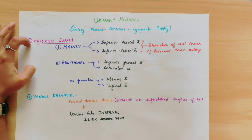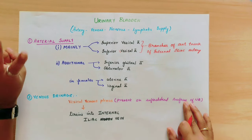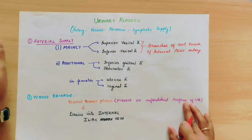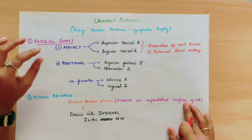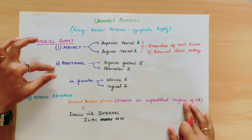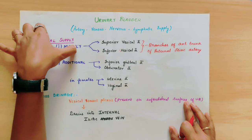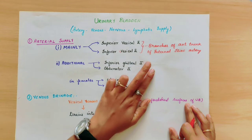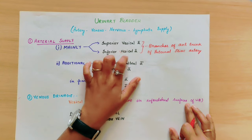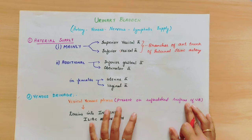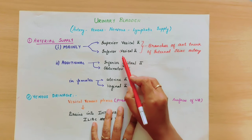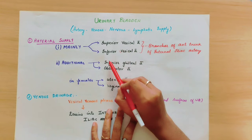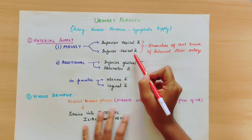First, we are looking at the arterial supply of the urinary bladder. We are looking at the main artery and the additional artery, with two divisions: the superior vesical artery and inferior vesical artery. 'Vesical' is the name relating to the urinary bladder, so the superior and inferior vesical arteries supply the urinary bladder.